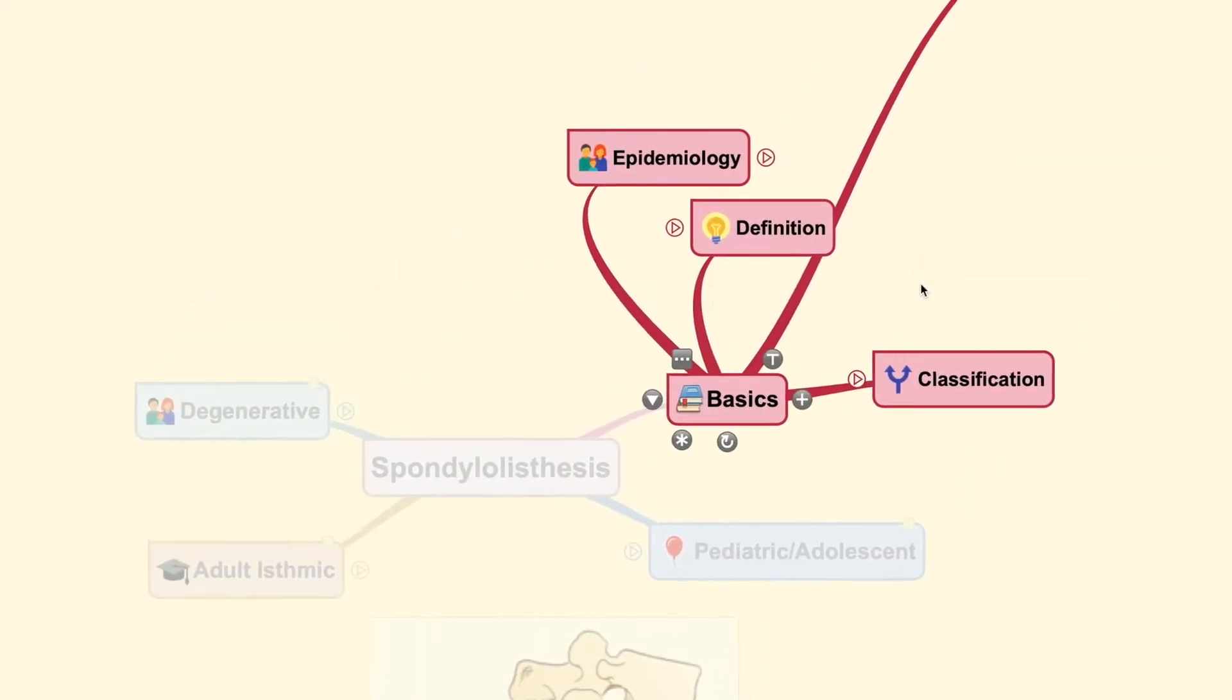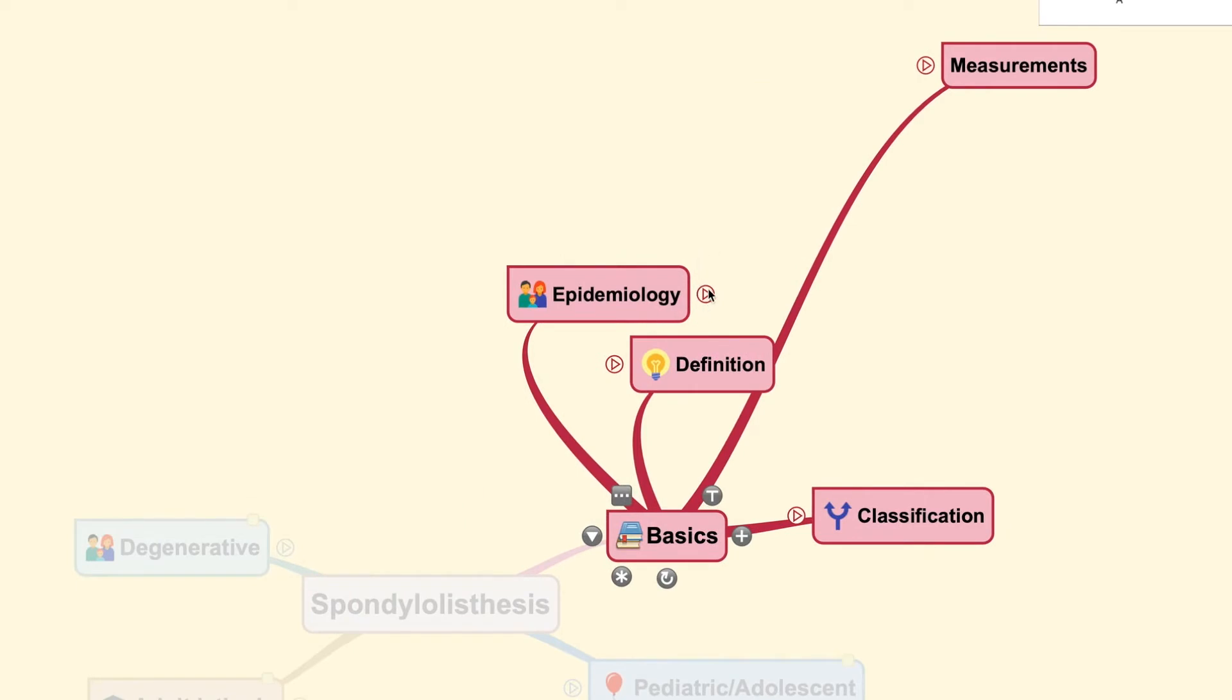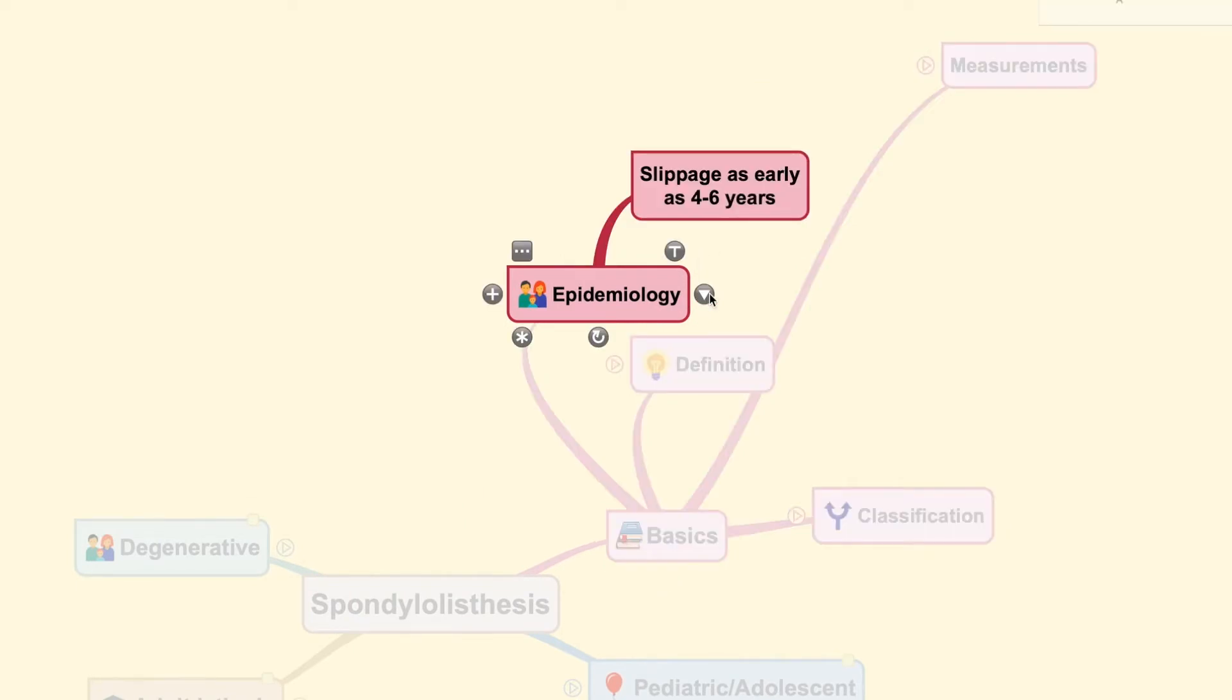For the basics itself, we could see that from the epidemiology, slippage could occur as early as 4 to 6 years, especially those in the pediatric type.